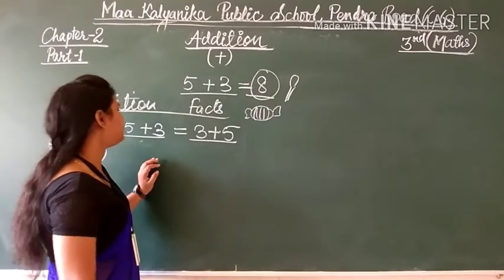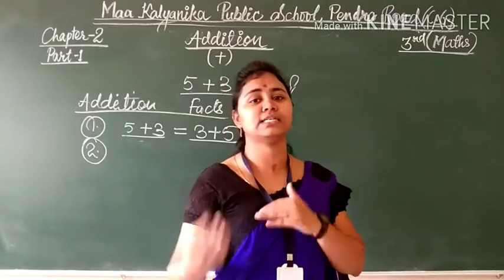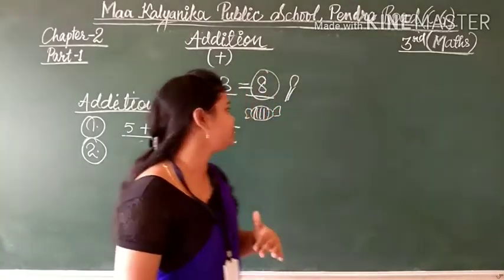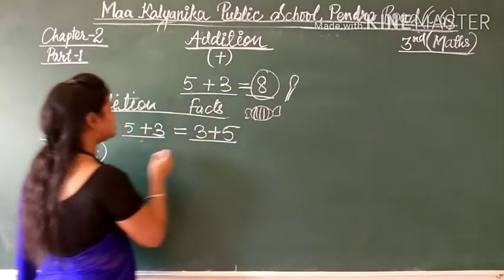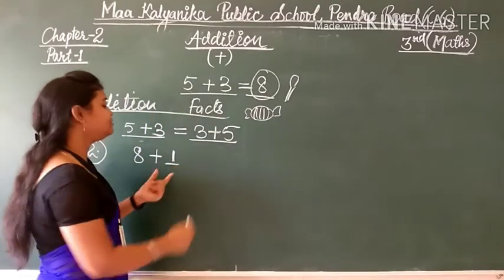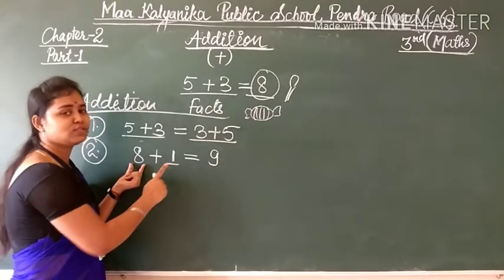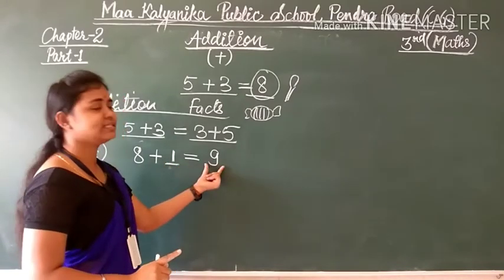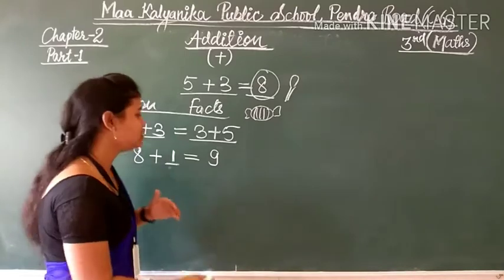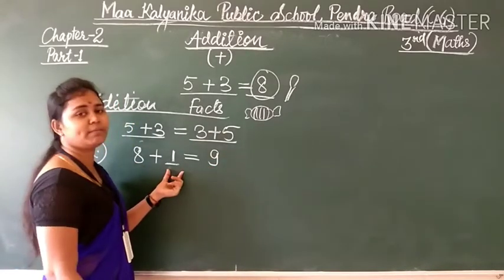The second fact of addition: if 1 is added to any number, the answer is the successor of that number — meaning the next number coming after it. For example, we had 8 chocolates; if 1 more chocolate is added, the answer is 9. So 8 plus 1 equals 9, and 9 is the successor of 8 — 9 comes after 8. Plus 1 means we receive the successor.